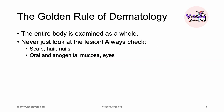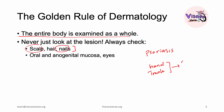Before we even talk about lesions, remember this golden rule of dermatology: the entire body is examined as a whole. A rash on the hands may be connected to a finding on the scalp or the nails. For instance, if a patient has psoriasis and presents with a lesion on their hand or trunk, I'm going to also check their scalp and nails, because we also have nail psoriasis. Once you see a sign on the nails called a salmon patch or oil patch, this is pathognomonic of psoriasis.